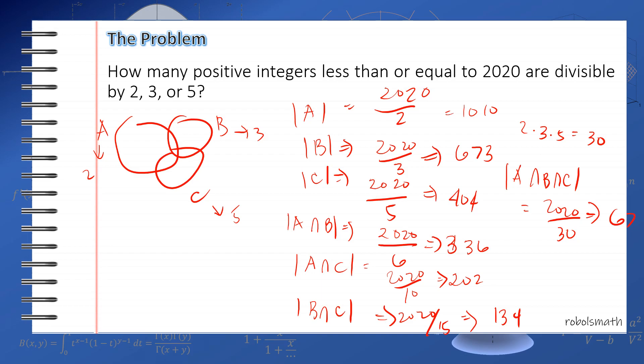So the total answer for this problem is 1010 plus 673 plus 404 minus 336 minus 202 minus 134 plus 67. I won't try to add this mentally, so I'll use a calculator. The answer is 1482.